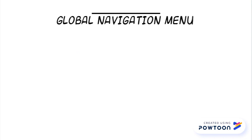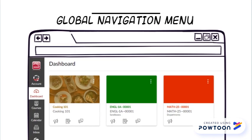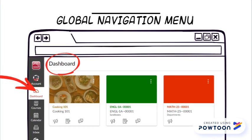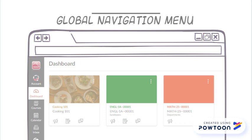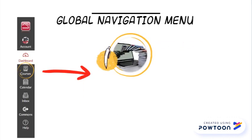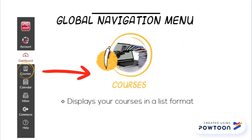The Canvas dashboard is your landing page when you first log into Canvas. It displays course cards for the courses you are currently enrolled in. The courses link is a menu that displays any current courses you are enrolled in in a list format.